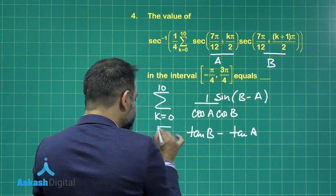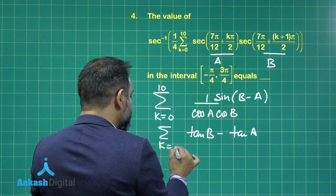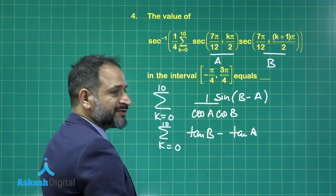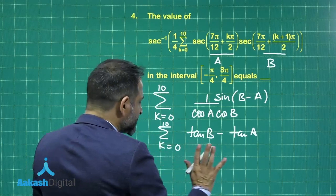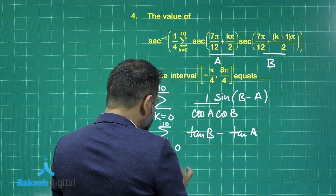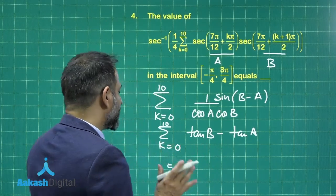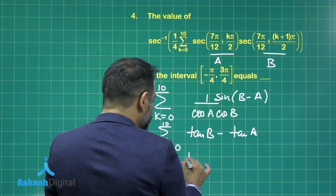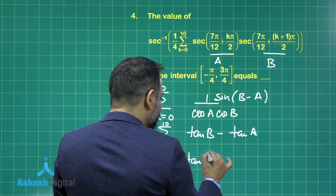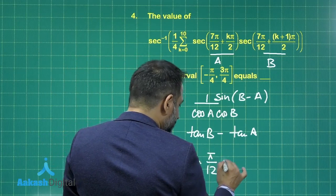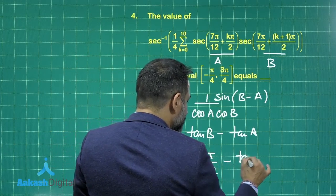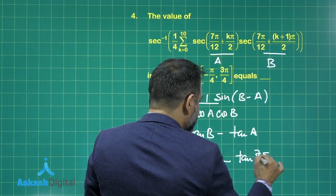Now if we sum this up from k equals 0 to 10. Now we have expressed this as a difference of two terms. If you sum this up, you will be left with only two terms, that is the first term and last term, and that will come out to be tan pi by 12 minus tan 7 pi by 12.